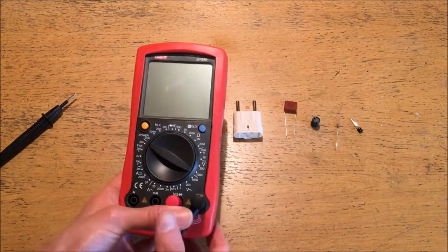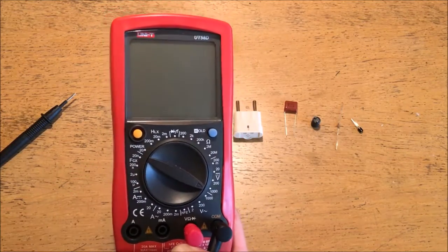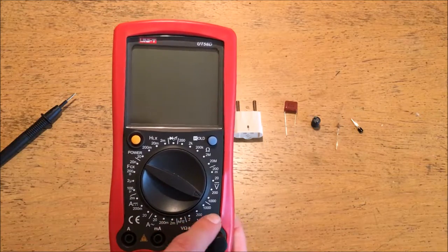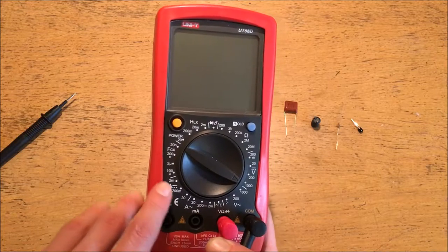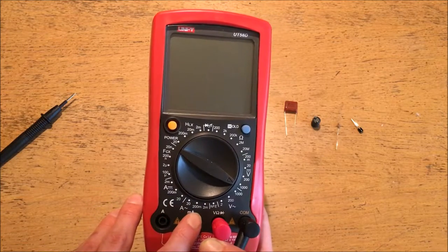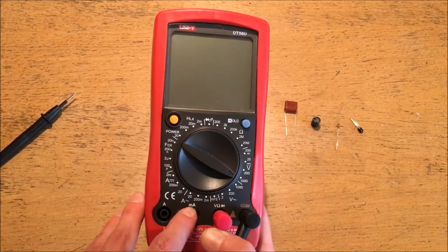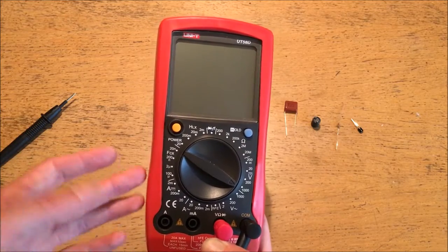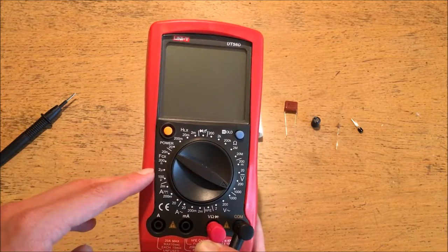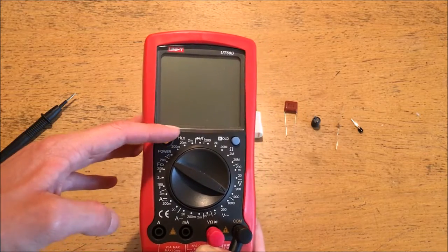This multimeter has a few added features that you won't find on an extremely cheap multimeter. For example it does amps alternating current in addition to the direct current amps both on the 20 amp and 200 milliamp range. Most cheap multimeters will only do DC amps. The reason I mainly bought this meter was because it also measures capacitance in farads and inductance in Henry's.